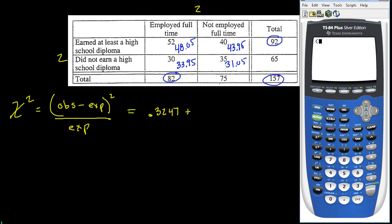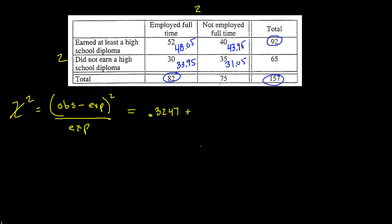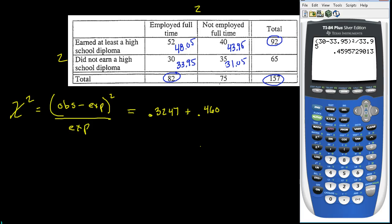For no diploma but employed full-time: (30 − 33.95)² / 33.95 = 0.460. This is the exact same formula used for the goodness of fit test; the problem setup is just different. For diploma and not employed full-time: (40 − 43.95)² / 43.95 = 0.355. Don't forget to square — that's the number one mistake students make.